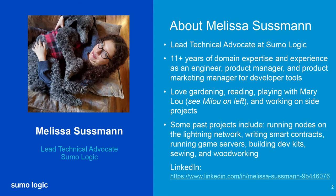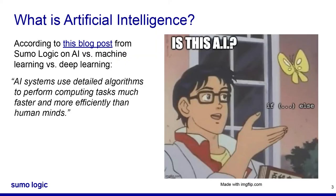Now on to the things everyone wants to talk about. According to a blog post from Sumo Logic on AI versus machine learning versus deep learning: AI systems use detailed algorithms to perform computing tasks much faster and more efficiently than human minds. This means that AI is an umbrella term that can include machine learning and deep learning, but may also be unable to rationalize or learn from datasets. Popular movies and media often use these terms without clearly defining them, leading to a misunderstanding of the limitations and capabilities of machines. There's even a little meme here of a guy asking, 'Is this AI?' — with an if-else statement.